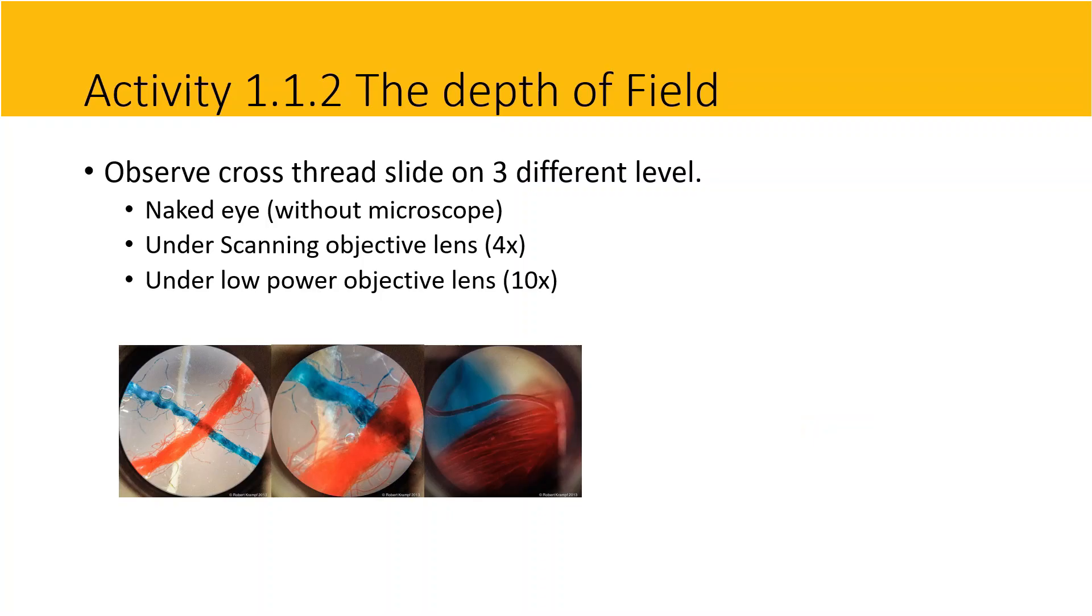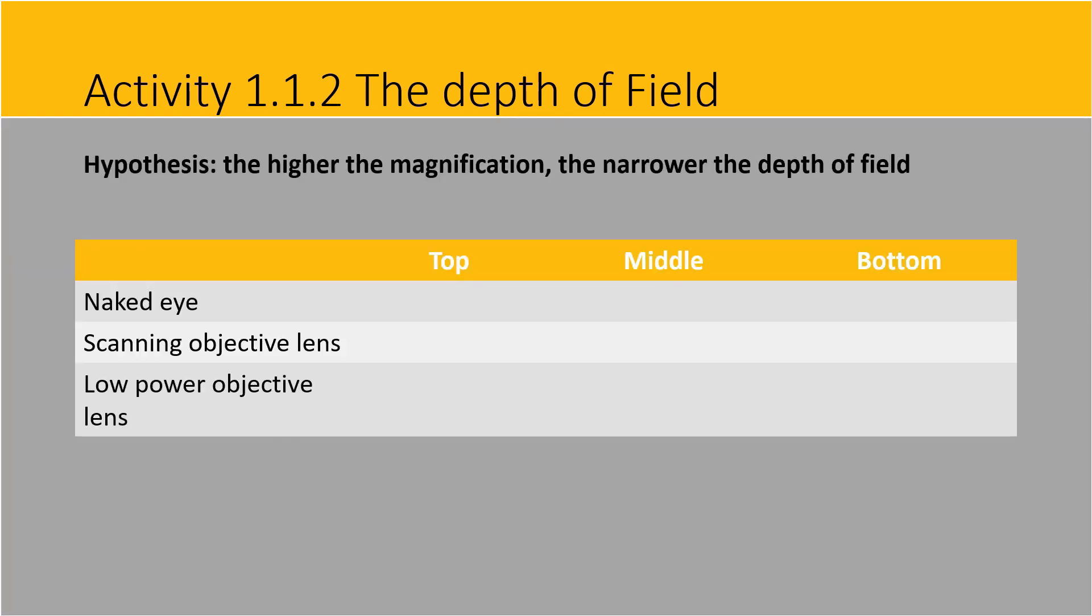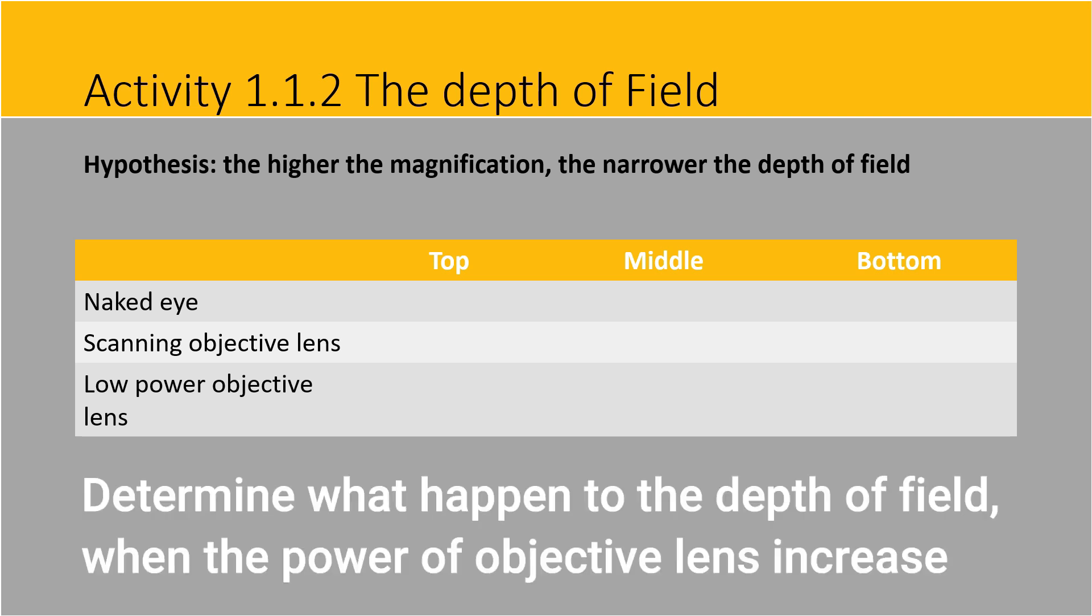Activity 1.1.2, depth of field analysis. Observe the cross thread slide on three different levels: Level 1 by naked eye, Level 2 under the scanning objective lens, Level 3 under the low-power objective lens. Observe the color of the cross threads and identify the location of each colored thread - which thread is at the top, middle, and bottom. Record your observations in the tables provided.